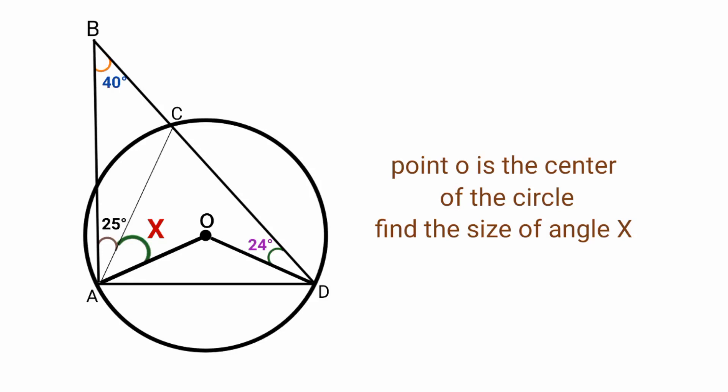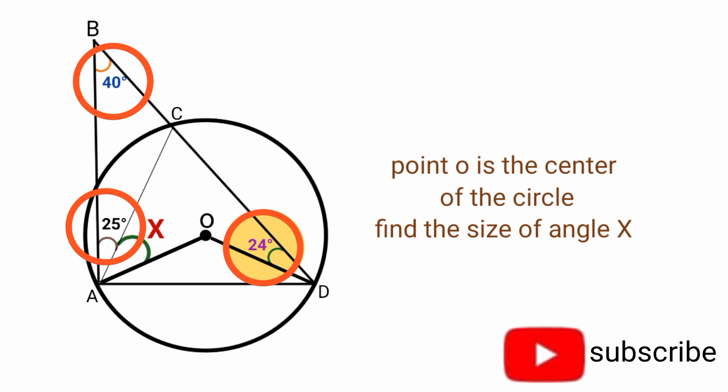In this question we are asked to find the size of angle X and they said point O is the center of the circle. So how can we find X here? We are given the sizes of three angles: 40 degree, 25 degree and 24 degree, and we are expected to find the size of angle X from them.